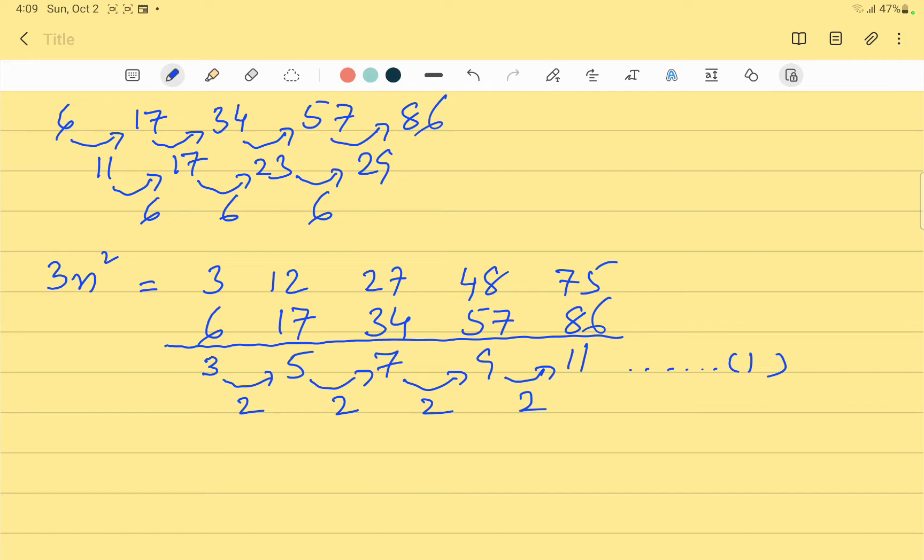Now the differences are the same, so our next term of the nth expression is 2n. Let us write the sequence for 2n: when n equals 1, it's 2; when n equals 2, it's 4; when n equals 3, it's 6; when n equals 4, it's 8; and when n equals 5, it's 10. Let us call this Series 2.